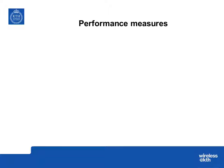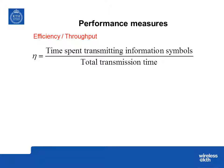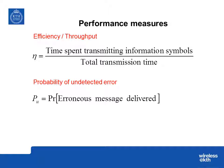The performance measures we will be concerned with are mainly three. First, the efficiency or throughput of the protocol — defined as the time spent transmitting information symbols divided by the total transmission time required. Second, the probability of undetected errors, which is the probability that an erroneous message is actually delivered to the data user. Third, the end-to-end delay: how long it takes for a message to be transmitted to the receiving side.